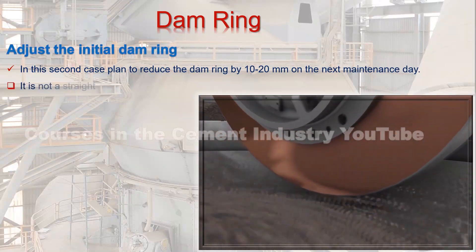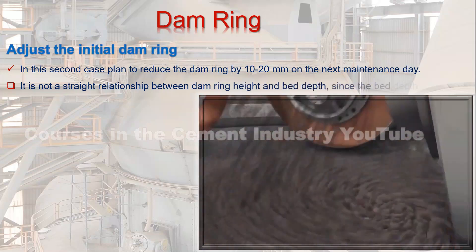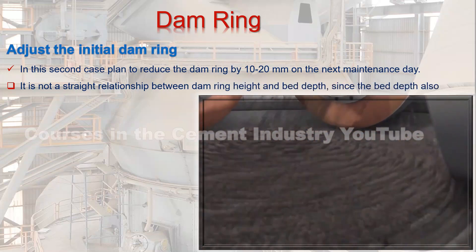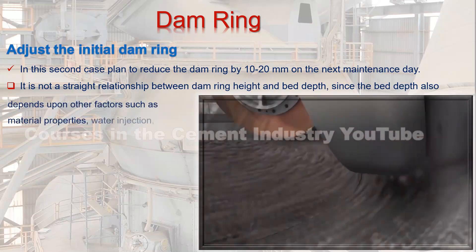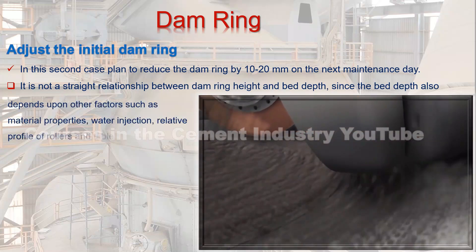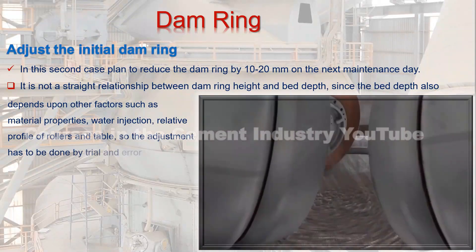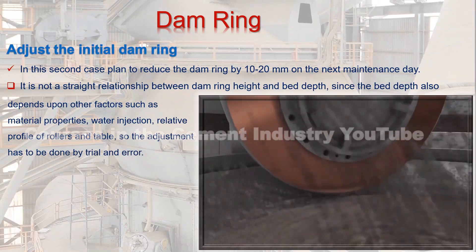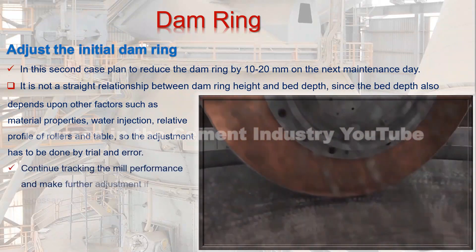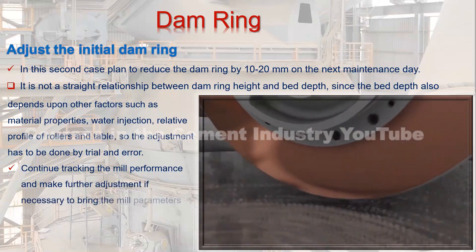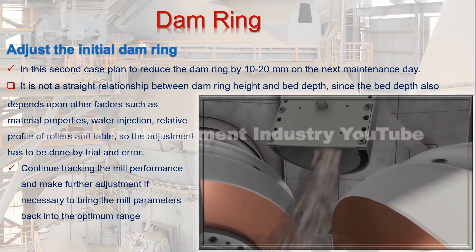It is not a straight relationship between dam ring height and bed depth, since the bed depth also depends upon other factors such as material properties, water injection, and the relative profile of rollers and table. So the adjustment has to be done by trial and error. Continue tracking the mill performance and make further adjustments if necessary to bring the mill parameters back into the optimum range.